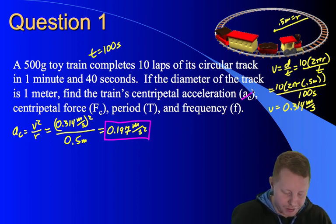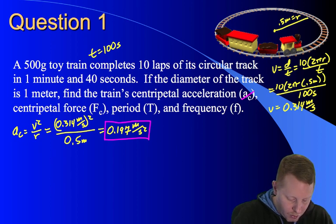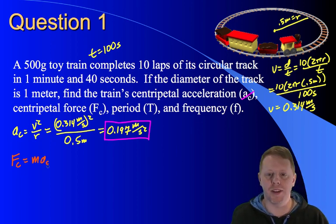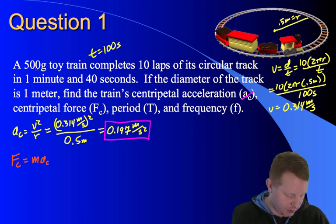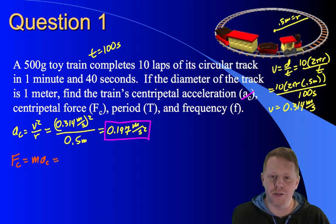Next up, we're asked to find centripetal force. We can do that in a similar manner. Centripetal force is just mass times centripetal acceleration. Notice it gives us our mass in grams. Our standard unit in physics is kilograms. So we have to convert that to kilograms first.